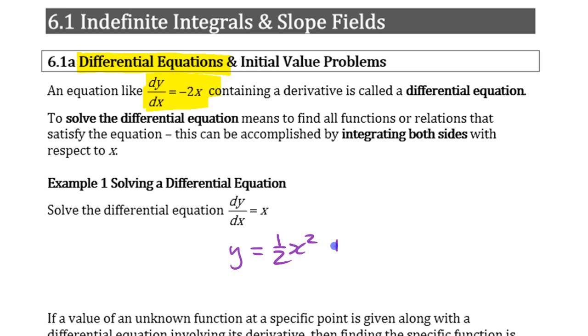Half x squared, right? Because it could be half x squared plus any constant there, so plus c. So that's the solution to that differential equation.